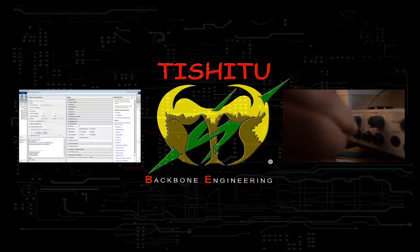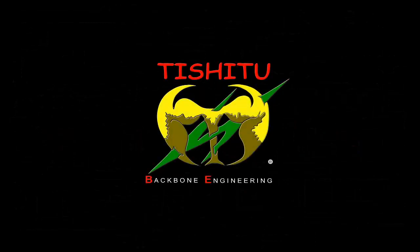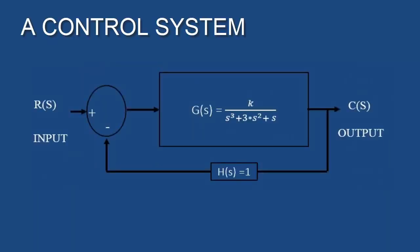Today we are going to apply it on a numerical problem and observe the response to spot the effect of PID controller parameters tuned with the help of Ziegler-Nichols Tuning method. For today's discussion, we assume the function of the plant is k upon s cube plus 3s square plus s, along with unity feedback.